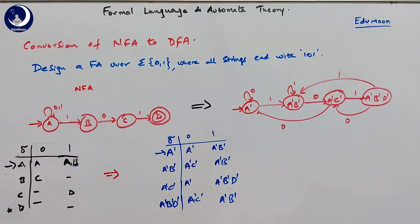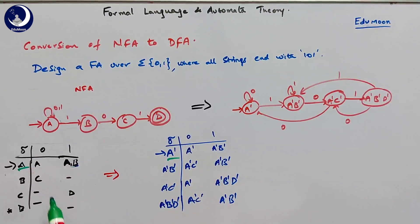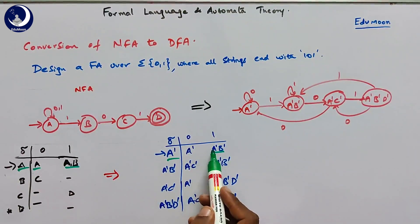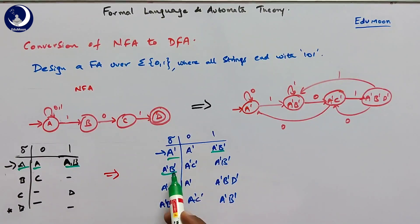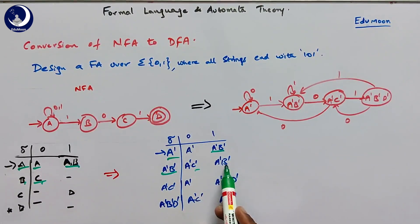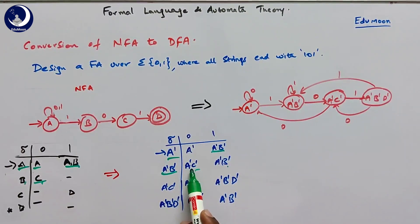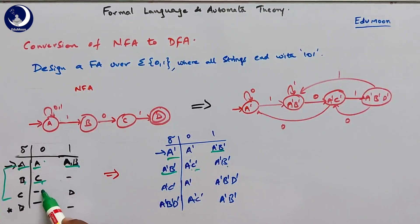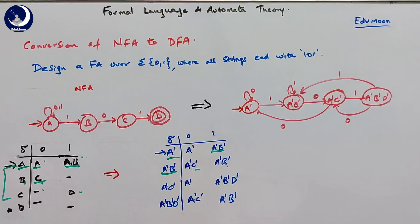To repeat the steps for clarity: from the NFA table, we start with initial state A. A on 0 goes to A; A on 1 goes to A and B, so we take A,B as a new combination. Then for A' and B': A,B on 0 gives A,C — another new state. A,C on 0 gives A; A,C on 1 gives A,B,D. We continue until no new combinations arise.